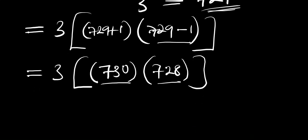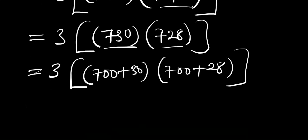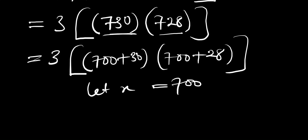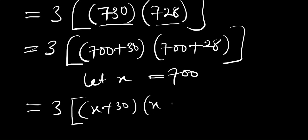Next we need to multiply 730 by 728. We can rewrite 730 as 700 + 30 and 728 as 700 + 28. We let x equal 700, so we have 3 times (x + 30)(x + 28).